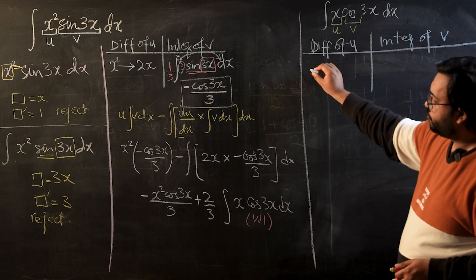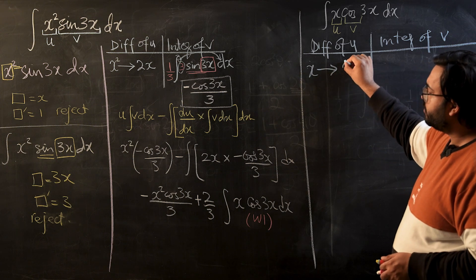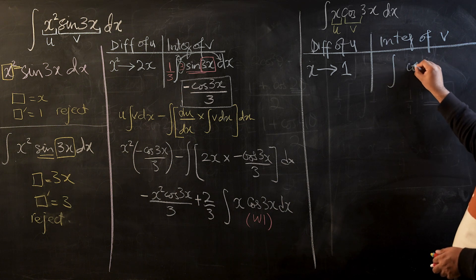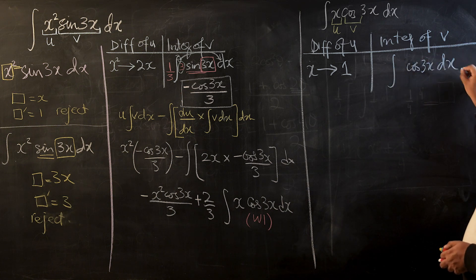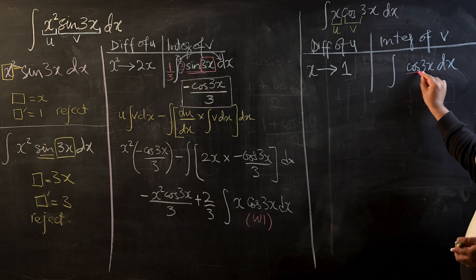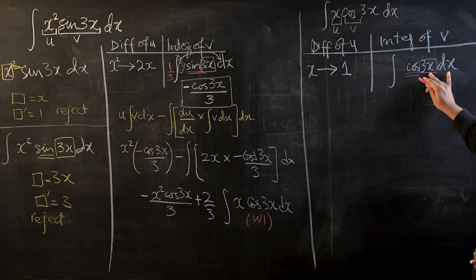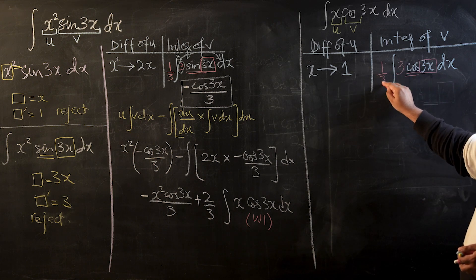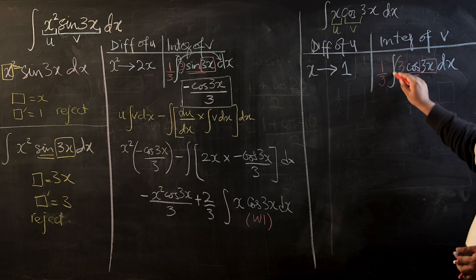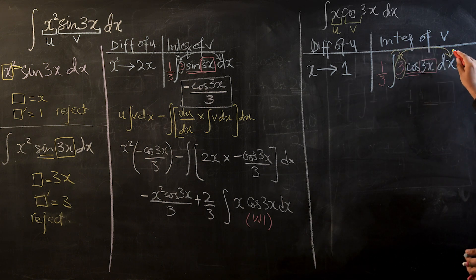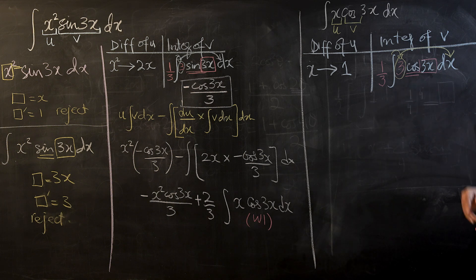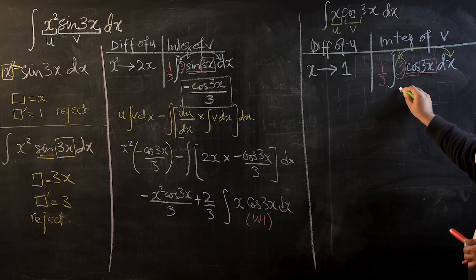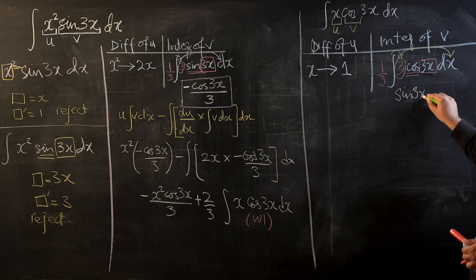The differentiation of u (which is x) is 1. For the integral of v, we take cos as the operator with inner function 3x. We need 3 outside the operator, so we introduce 3 and place 1/3 outside to balance. Once the condition is met, we integrate cos(3x), and since the integral of cos is sine, we get sine(3x)/3 as the integral of v.